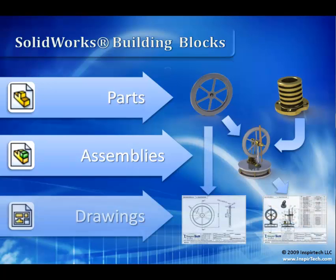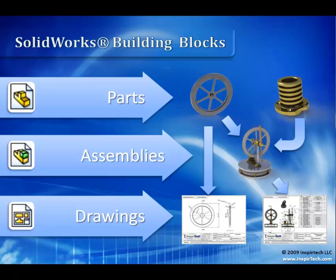Once you have parts in assemblies, you can then generate working drawings. Drawings are similar to assemblies in the sense that they don't contain the geometry, but are rather just views of parts or assemblies. Like a webcam — if you moved away, you'd no longer be visible. A drawing is dynamic in the sense that it's constantly looking at a part or assembly, so changes are reflected on the drawing. A drawing file is useless without the corresponding parts and/or assemblies.